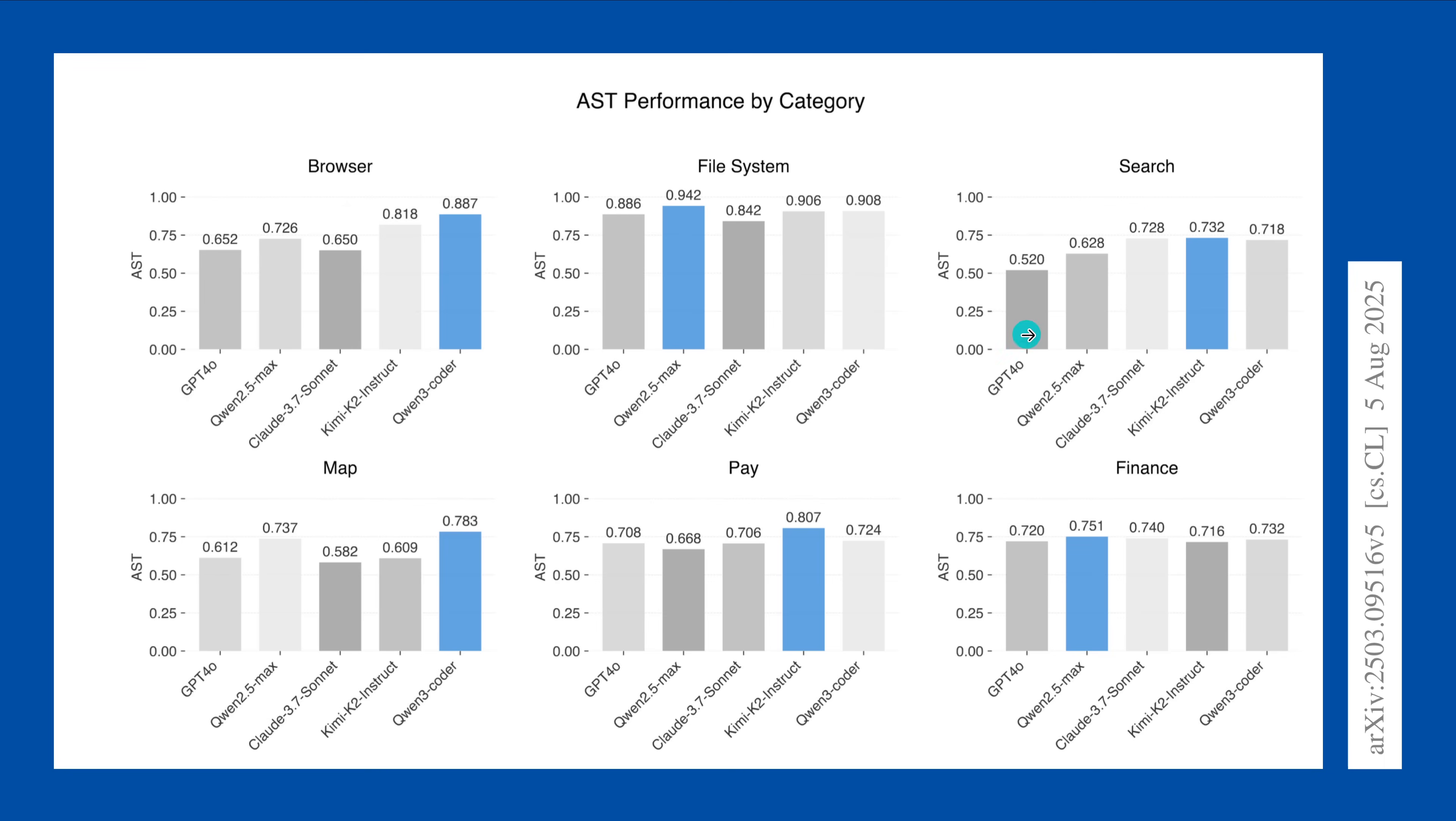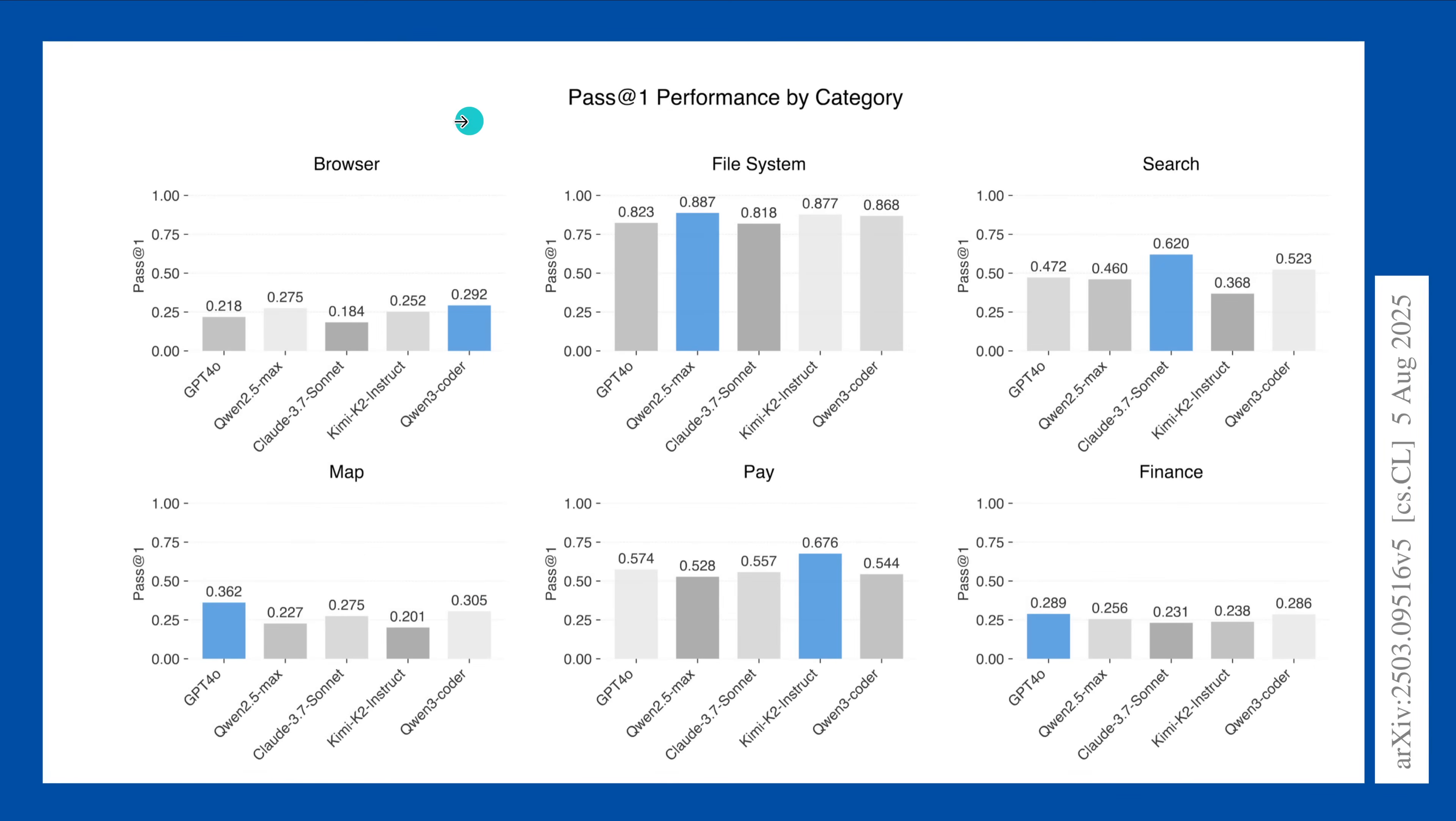But search, yeah, at 50% with GPT-4 Omni, 60% with QwQ 2.5 Max, 70% with Sonnet. Nice, no? Kimi K2 also 73%. And QwQ 3 coder, 71%, 72%. So we see, okay, so for the plan, everything is great for the planning. But now buckle up, because now we're going to have a look at the result performance. Now, the result performance with browser is mediocre. 21% for GPT-4 Omni. At least 29% for QwQ 3 coder.